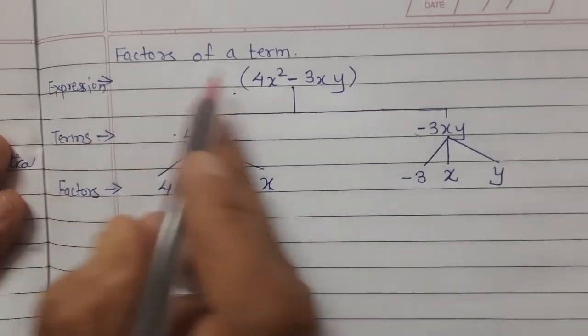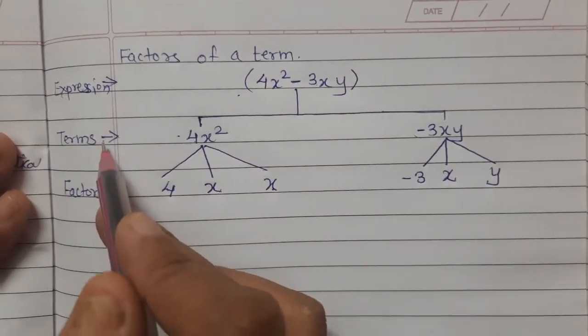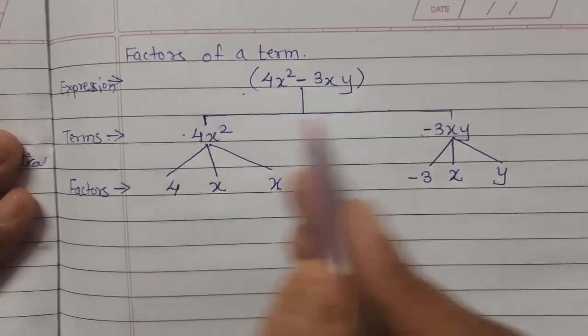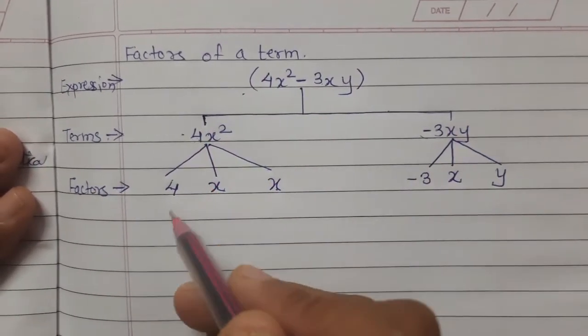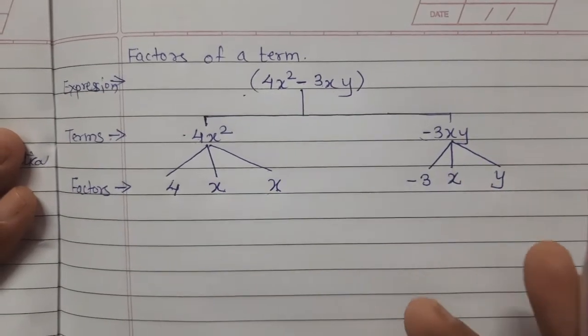So to summarize: this is the given expression, these are the terms, and from the terms we find the factors.